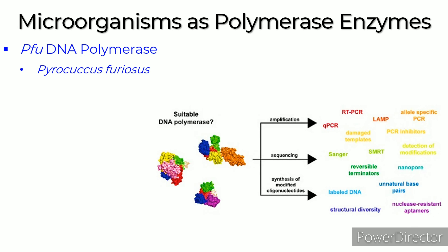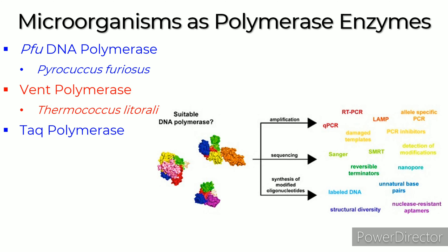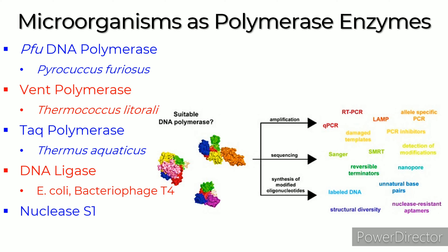Polymerase enzymes produced by microorganisms include Pfu DNA polymerase produced by Pyrococcus furiosus, Vent polymerase produced by Thermococcus litoralis, Taq polymerase produced by Thermus aquaticus, DNA ligase produced by E. coli and bacteriophage T4, and Nuclease S1 produced by Aspergillus oryzae. They are used for maintaining genome integrity during replication and repair, and are widely used for DNA manipulation in vitro including DNA cloning, sequencing, labelling, mutagenesis, and other purposes.